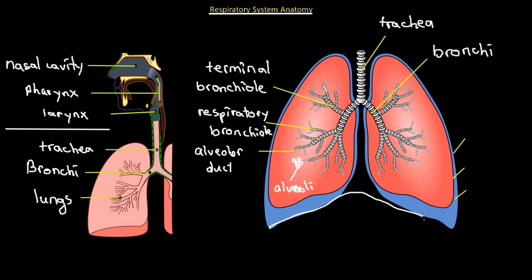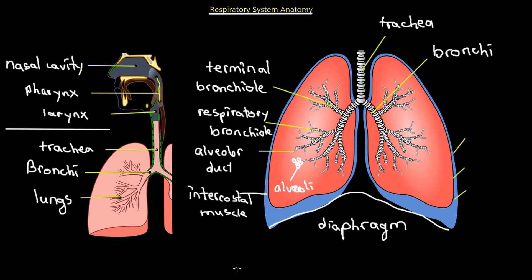The structure that goes underneath the lungs is called the diaphragm, and the diaphragm is responsible for contraction of the lungs, stimulating breathing. There are also the intercostal muscles — the muscles that go in between the ribs. The diaphragm and the intercostal muscles together are responsible for inflating and deflating the lungs.